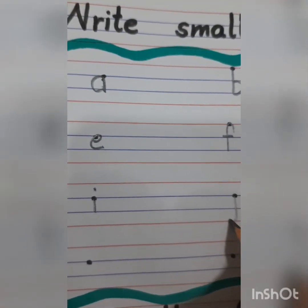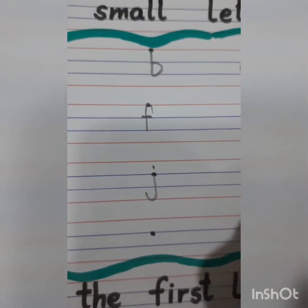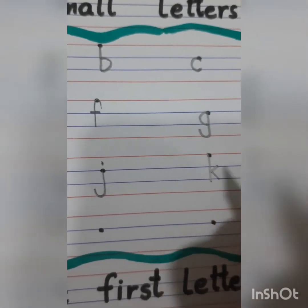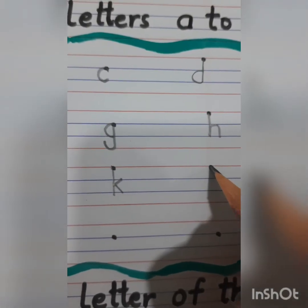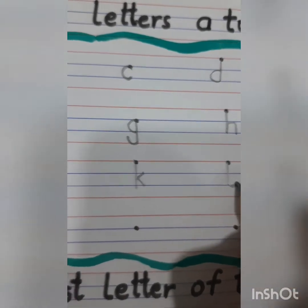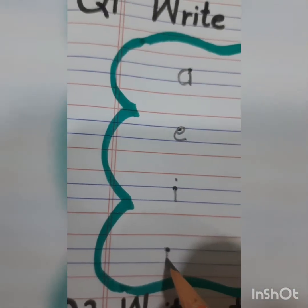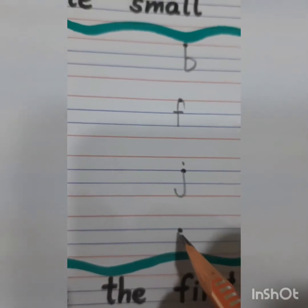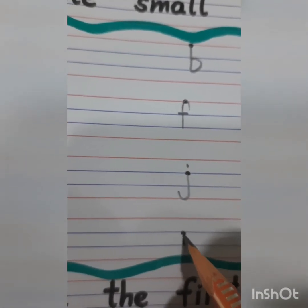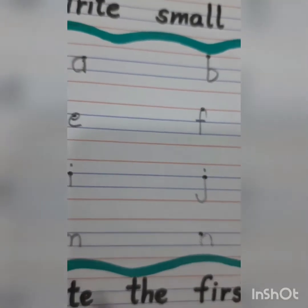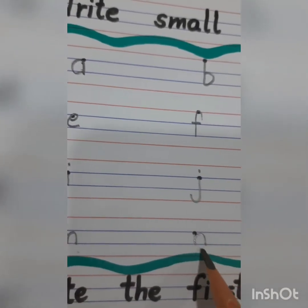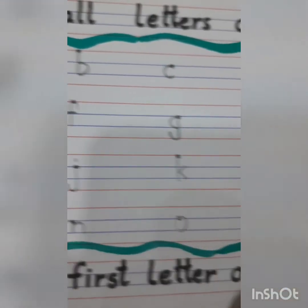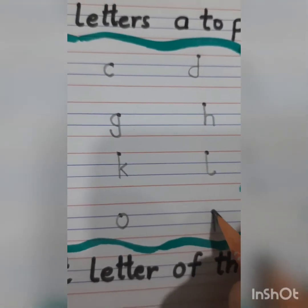J, K, L, M. What comes after M children? N. O. And this is small P.